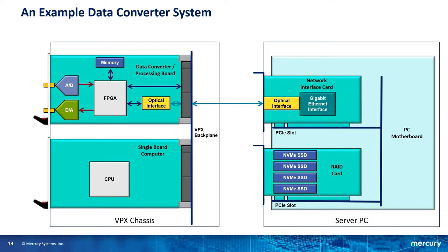Starting with the data converters, we'll look at JESD204 as an interface to the FPGA. Then we'll look at the gigabit serial interfaces on the FPGA that are used to support JESD204. Then we'll look at memory resources and particularly high bandwidth memory or HBM. Then we'll look at moving data on and off the board with gigabit Ethernet interfaces and optical interfaces, and how these can all be used within a SOSA-aligned system. And then we'll move out of the chassis to the storage side and look at PCIe and solid state storage and RAIDs.